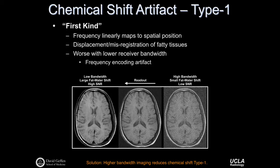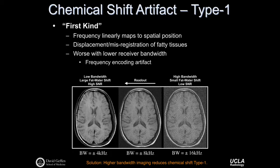Moving to higher bandwidth reduces the fat-water shift so fat signal is well-registered with the underlying anatomy, but because you're moving across k-space very quickly, you have lower signal-to-noise. You have to choose a trade-off — perhaps an intermediate level of chemical shift and some noise. The solution is that higher bandwidth imaging will increasingly reduce the chemical shift type 1 artifact, but the consequence is increasing noise levels that may or may not be acceptable.